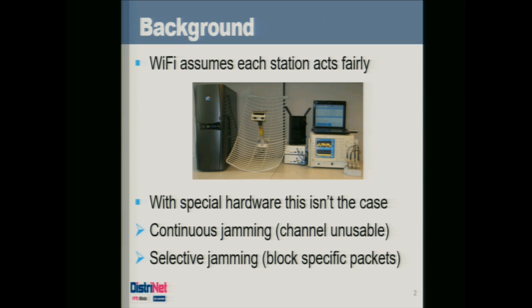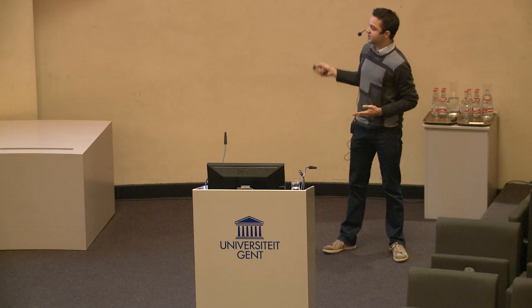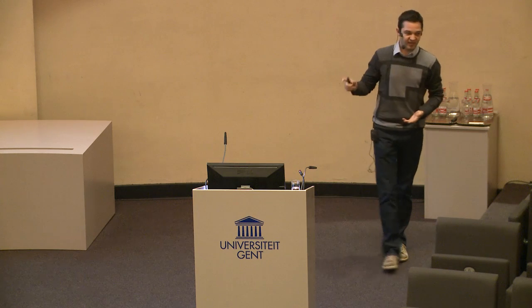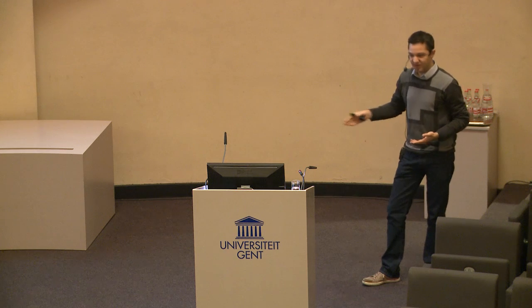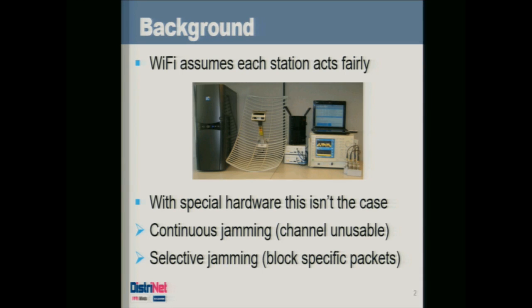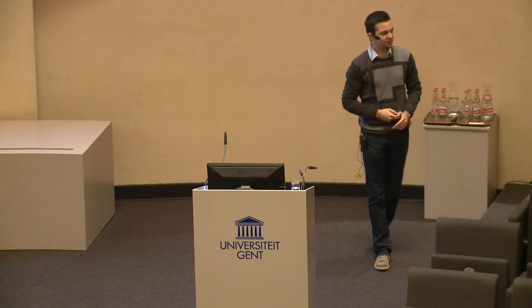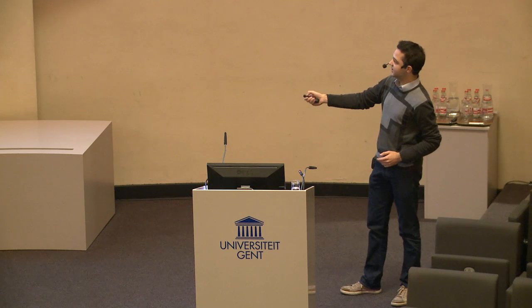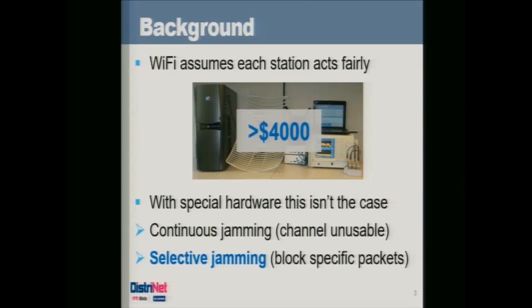A selective jammer doesn't just jam the complete channel — it is able to specifically block certain packets only. It decodes the header of a packet, and based on information in the header, such as the source or destination address, it decides whether to jam the remaining content. This attack is difficult to implement because the device must process and decode the header fast enough to then jam the remaining content. Generally, it is believed that you need expensive equipment like USRPs to pull this off.